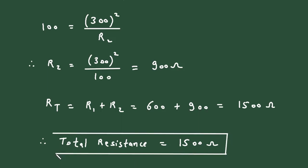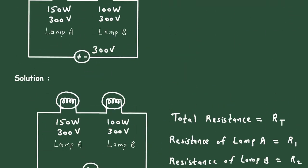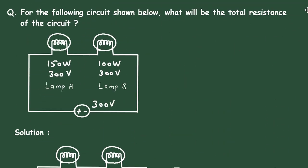So this is how we can find the value of total resistance when two lamps are connected in series. Don't forget to check out the other videos on this channel. Thanks for watching.